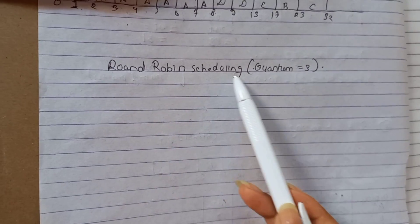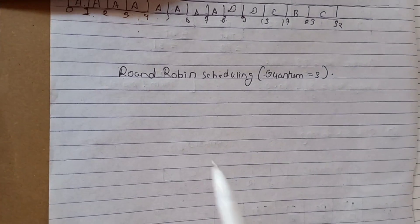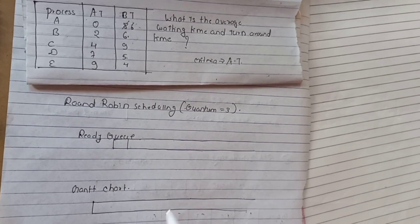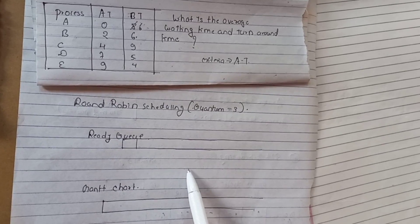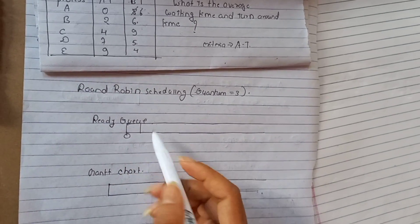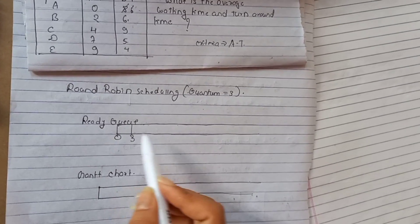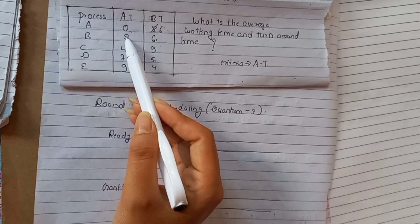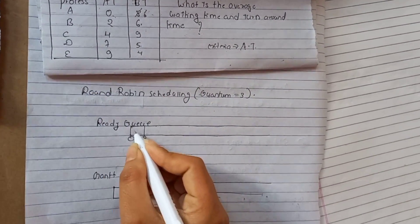For Round Robin scheduling, the quantum time is given as 3. With quantum time of 3, we start the Gantt chart. From time 0 to 3, we check which processes are in the ready queue. From 0 to 3, process A is ready and process B is also ready. We write process A first in the queue.